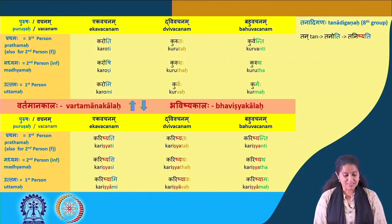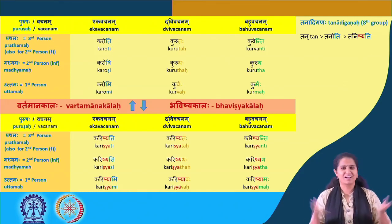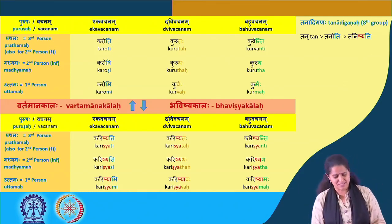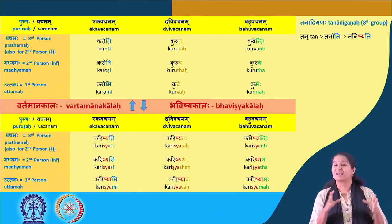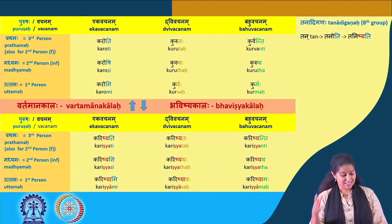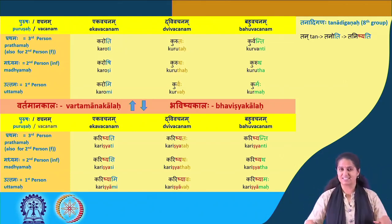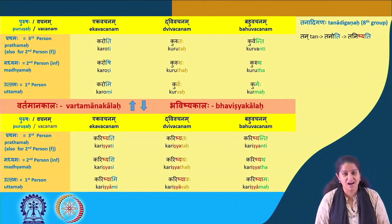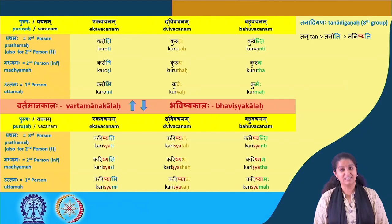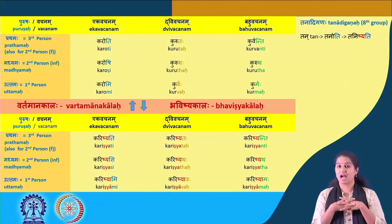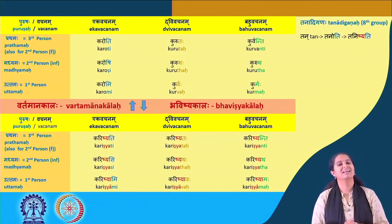The next one is the Bhavishakala. Bhavishakala bahu saralam asti — it is very simple. The forms are: Karishyati, Karishyataha, Karishyanti, Karishyasi, Karishyathaha, Karishyasi, Karishyatha, Karishyami, Karishyavaha and Karishyamaha.